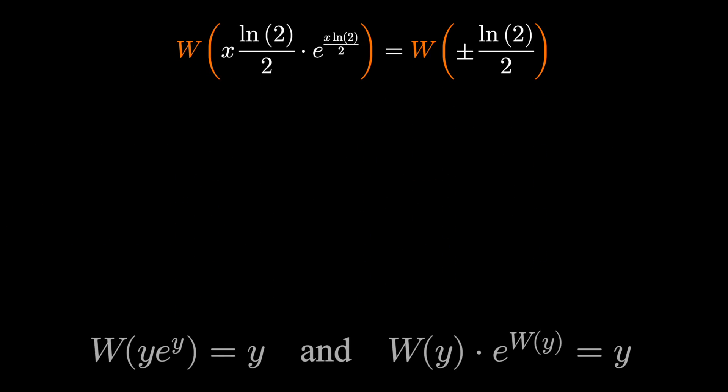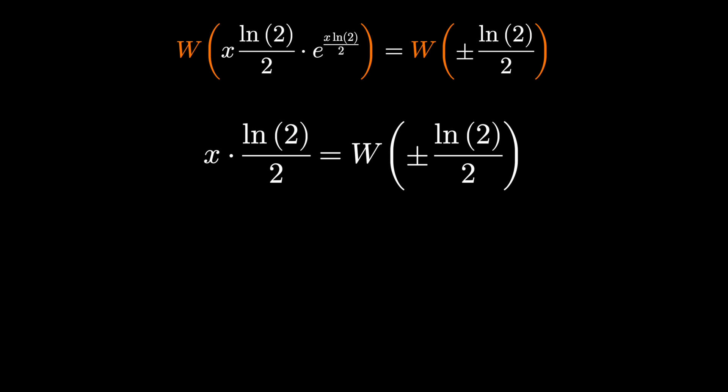Remember, W is the inverse function to x e to the x, and so applying it to x e to the x just spits out x, or in this case, x ln 2 over 2. Our equation is x ln 2 over 2 equals W of plus or minus ln 2 over 2. We can isolate x simply by multiplying by 2 and dividing by natural log 2.